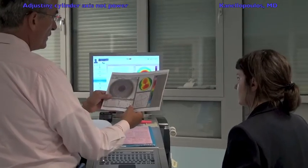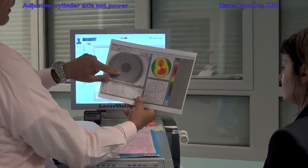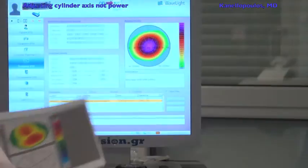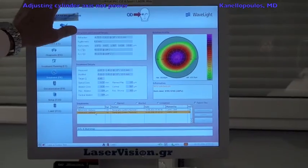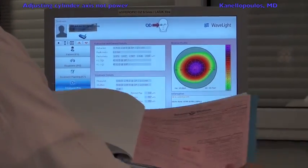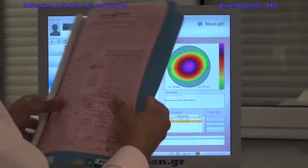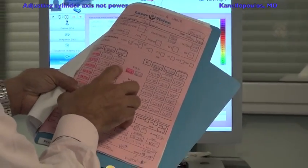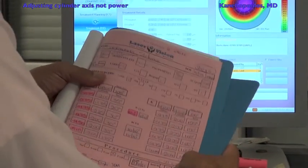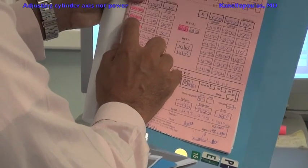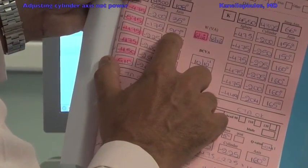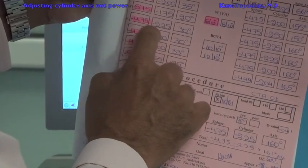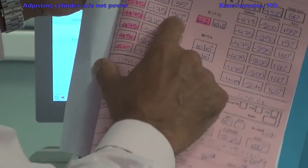We can see on this placido topography that it has some angle kappa. The pupillary aperture does not coincide with the corneal apex. Very regular astigmatism. On the treatment plan, we have multiple refractions: minus 4.75 minus 2 at 35 degrees autorefraction, the patient is wearing minus 5.75 minus 1.75 at 20 degrees, and the manifest is minus 4.75 minus 2.25 at 30 degrees, very close to the autorefraction.